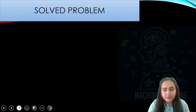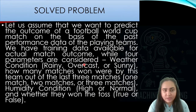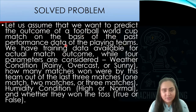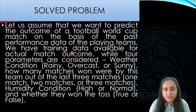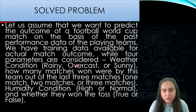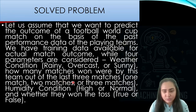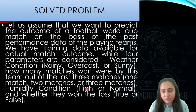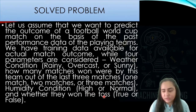Let's take a look at a solved problem using the Naive Bayes classifier. We want to predict the outcome of a football World Cup match based on past performance data. Some training data is available containing weather conditions — rainy, overcast, or sunny — how many of the last three matches the team won (one, two, or three), humidity (high or normal), and whether or not they won the coin toss (true or false).